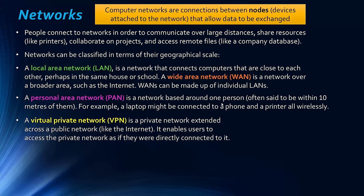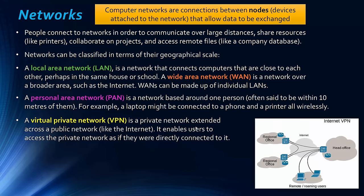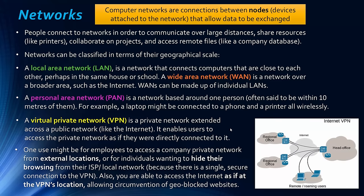A slightly different type is a virtual private network, or VPN — a private network that's been extended across a public network. When you use a VPN, it acts as if you're in a private network even though you're connected across a public one. A company might use a VPN so that roaming employees can connect to the company's private network via the internet, behaving as if they're actually on that private network.